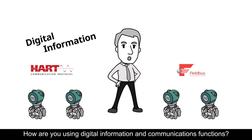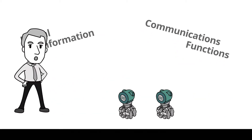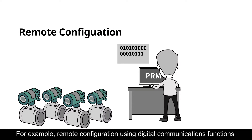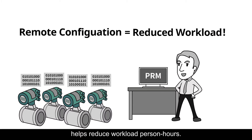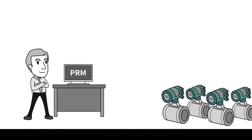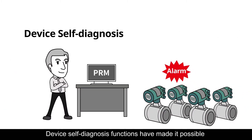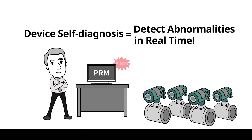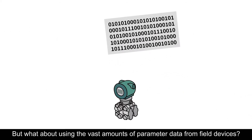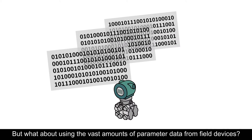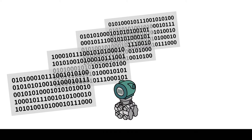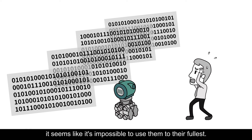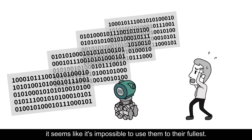How are you using digital information and communications functions? For example, remote configuration using digital communications functions helps reduce workload person hours. Device self-diagnosis functions have made it possible to detect abnormalities in real time. But what about using the vast amounts of parameter data from field devices? There are so many parameters and so many types of parameters, it seems like it's impossible to use them to their fullest.